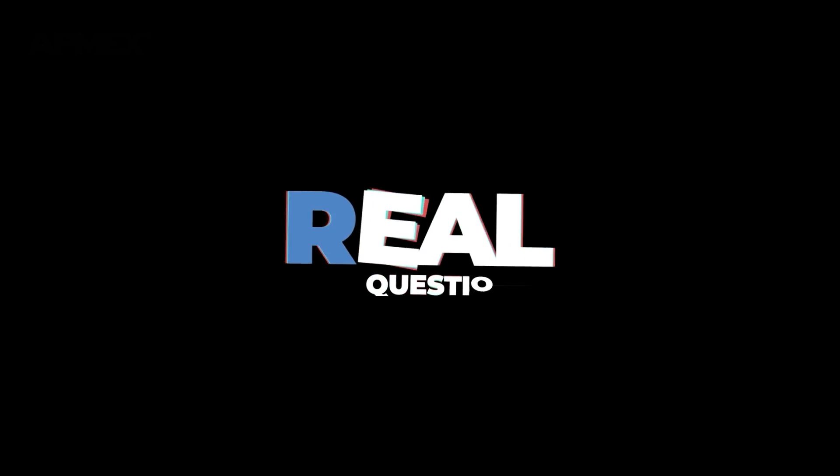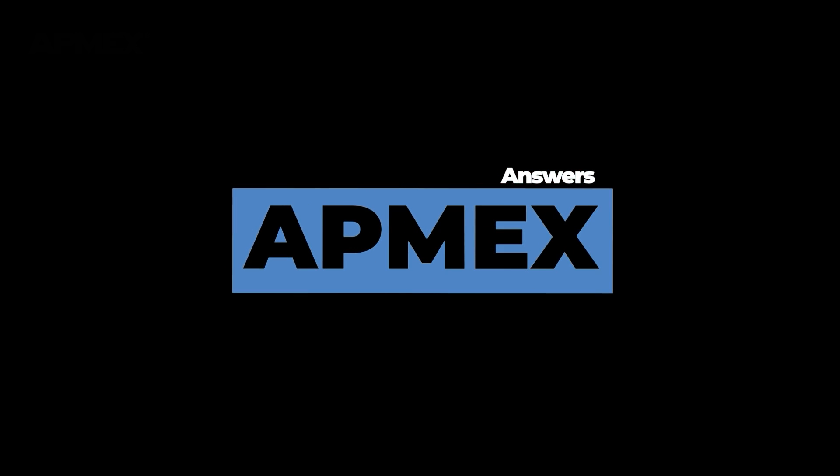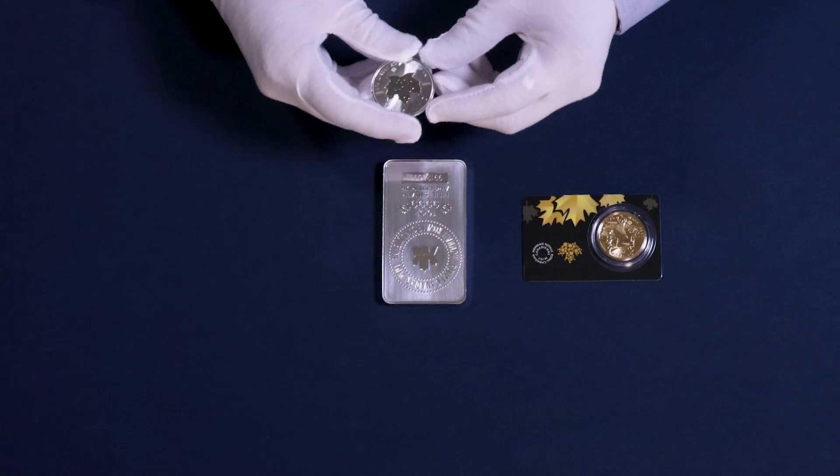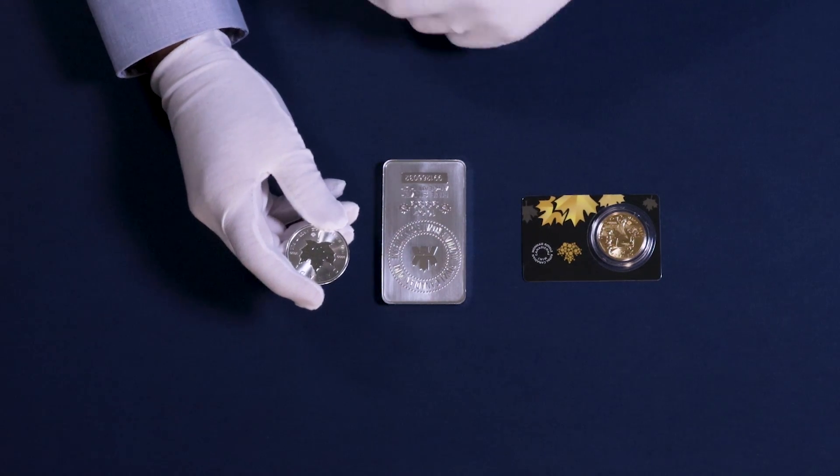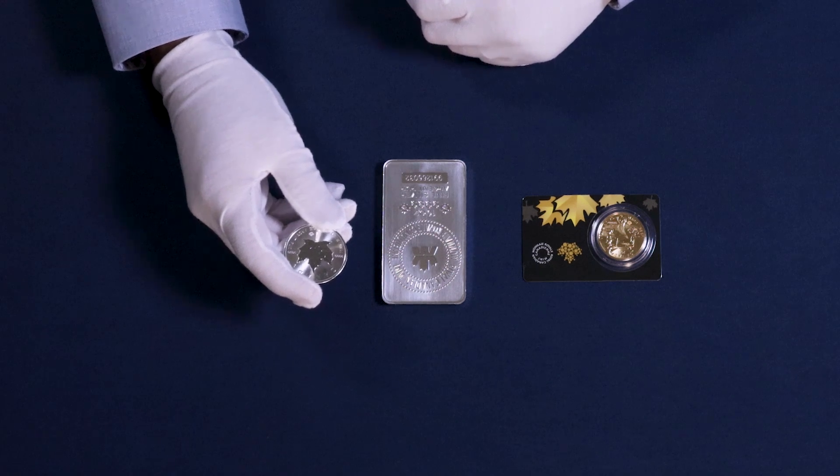What is the purest form of silver I can purchase? The purest form of silver available on the market is four nines fine silver. The Royal Canadian Mint produces their popular silver maple leaf series in 9999 fine silver.